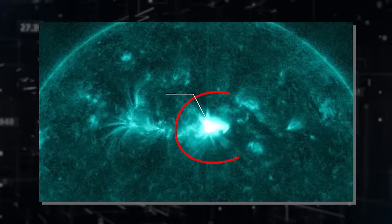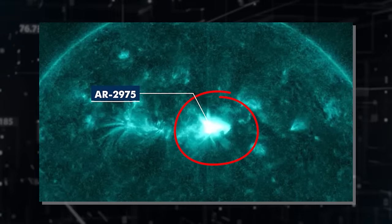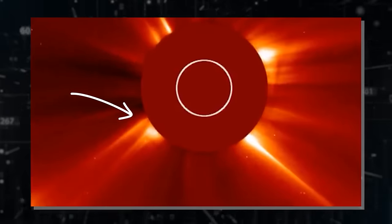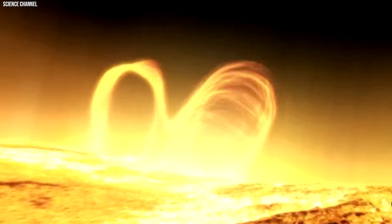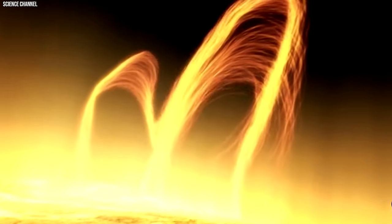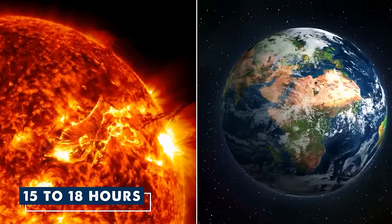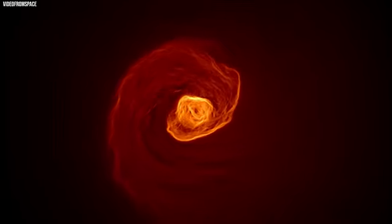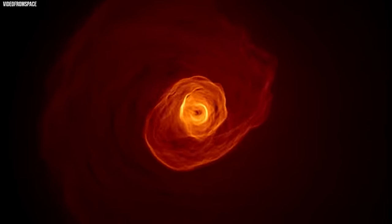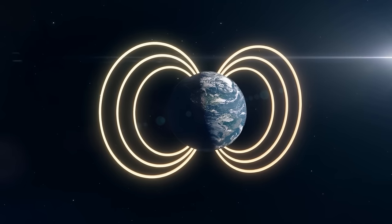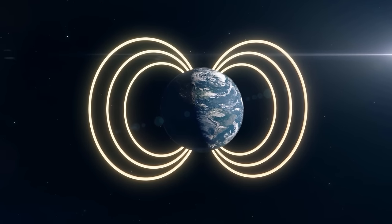Lately, AR2975, one of these sunspots, has been notably active, indicating increased solar activity. Solar flares which are unleashed from these sunspots typically take about 15 to 18 hours to travel from the sun to Earth. These flares, like cosmic tsunamis, carry a potent mix of energy and particles, potentially impacting our planet's magnetic field and causing disturbances in various technological systems.